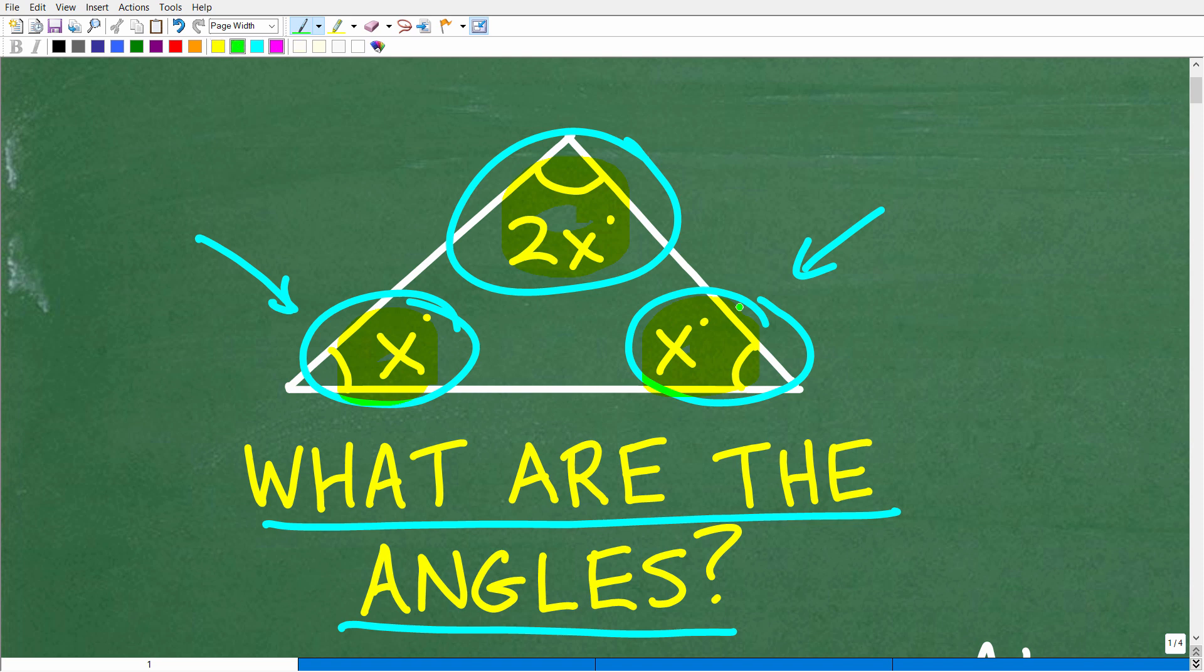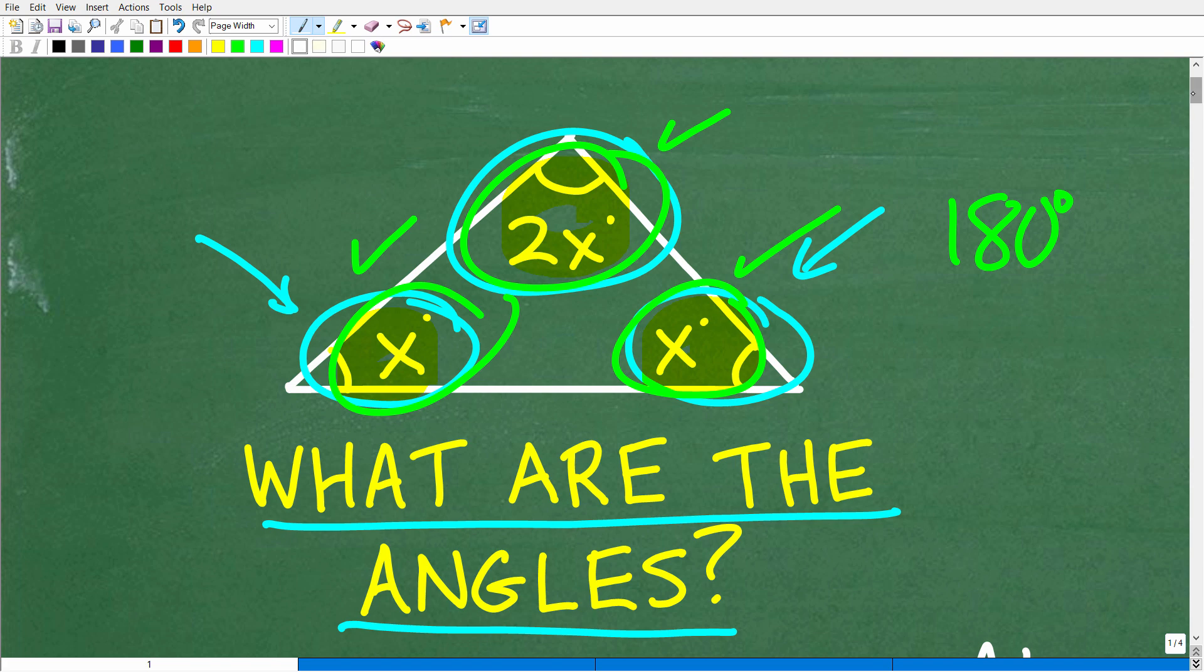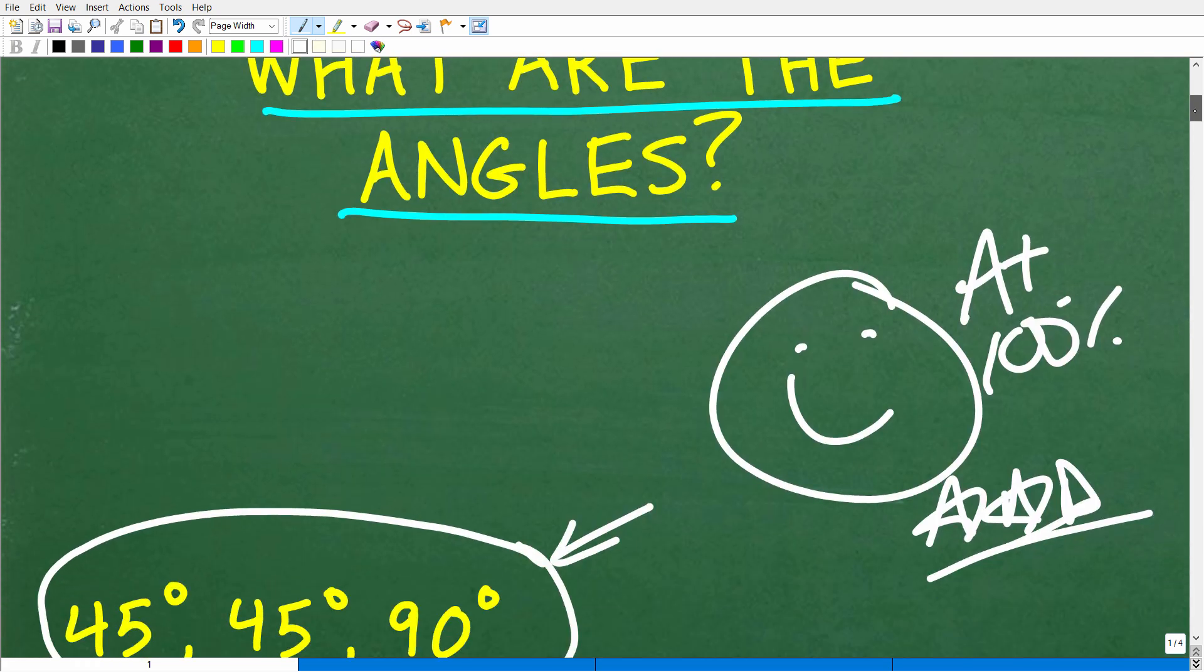Because you understand a key property of triangles. And that is namely the sum of the angles in a triangle. In other words, if I add up this angle, this angle, and this angle, or any three angles in a triangle, you're always going to get 180 degrees. And of course, we're going to use that key fact in order to solve this problem.